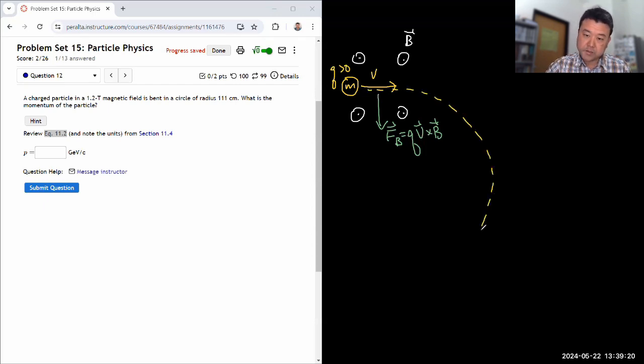So under this magnetic force, this is going to go in this circular path because the direction of the force will change alongside the direction of the velocity—all the stuff covered in Physics 4B.